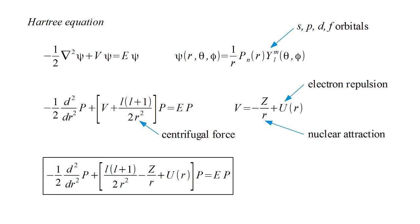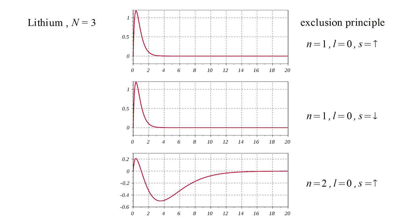In a central field, the angular behavior of the wave function is the same as for the already solved case of the hydrogen atom. All that remains is to solve an equation in the single radial variable r. And as in the case of hydrogen, each orbital is characterized by a set of quantum numbers, allowing us to enforce the exclusion principle by simply assigning different quantum numbers to each electron.